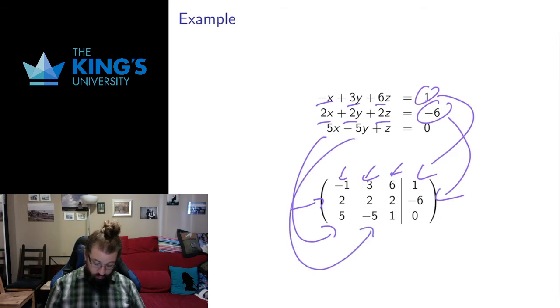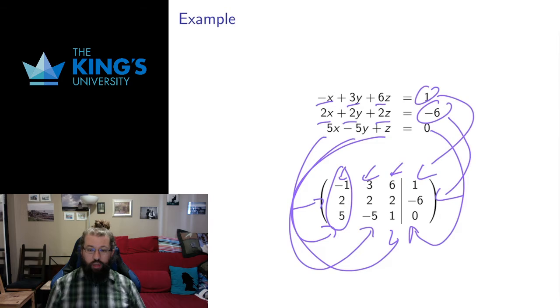5, negative 5, 1, constant 0, shows up there. All the pieces are there. The rows, the first column, or the columns, give us the variable. The first column is the x column, second column is the y column, third column is the z column, fourth column is the constants column. So all the information gets pulled from the system, and thrown into the matrix.